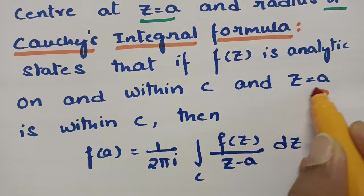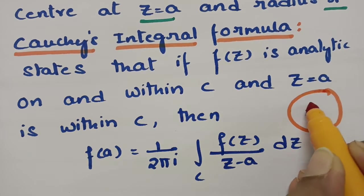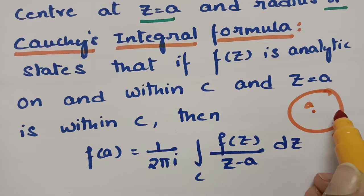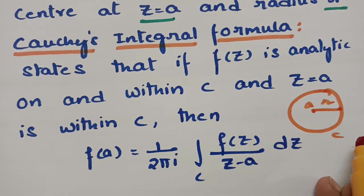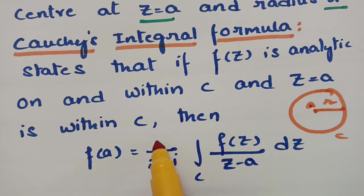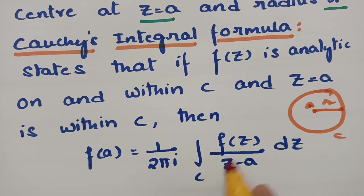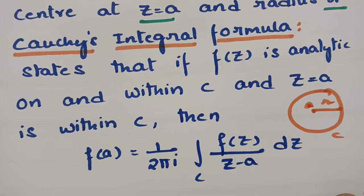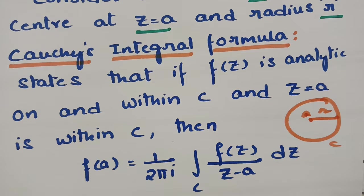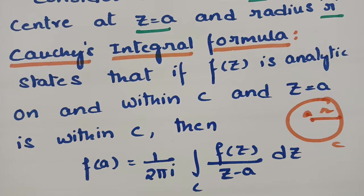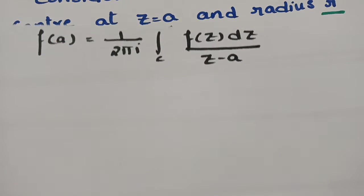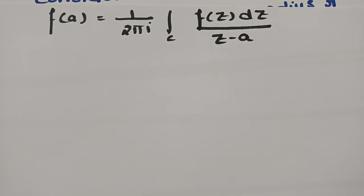This is the circle c, and this is a within the curve c, and this is radius r. According to Cauchy's integral formula, f of a can be written as 1 by 2 pi i integral over the closed curve c of f of z dz by z minus a. Using this Cauchy's integral formula, I am going to derive the Taylor series.